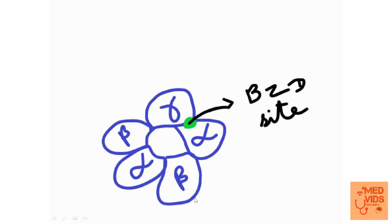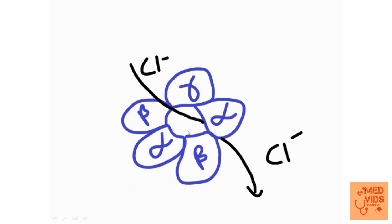The binding site for benzodiazepines (abbreviated BZD) on the GABA receptor is located between the alpha and gamma subunits. When benzodiazepine binds here, the GABA receptor opens the chloride ion channel, leading to entry of chloride ions from outside to inside the cells in the CNS. That causes hyperpolarization — the membrane potential becomes more negative — resulting in CNS depression, manifesting as sedation, hypnosis, and seizure control.